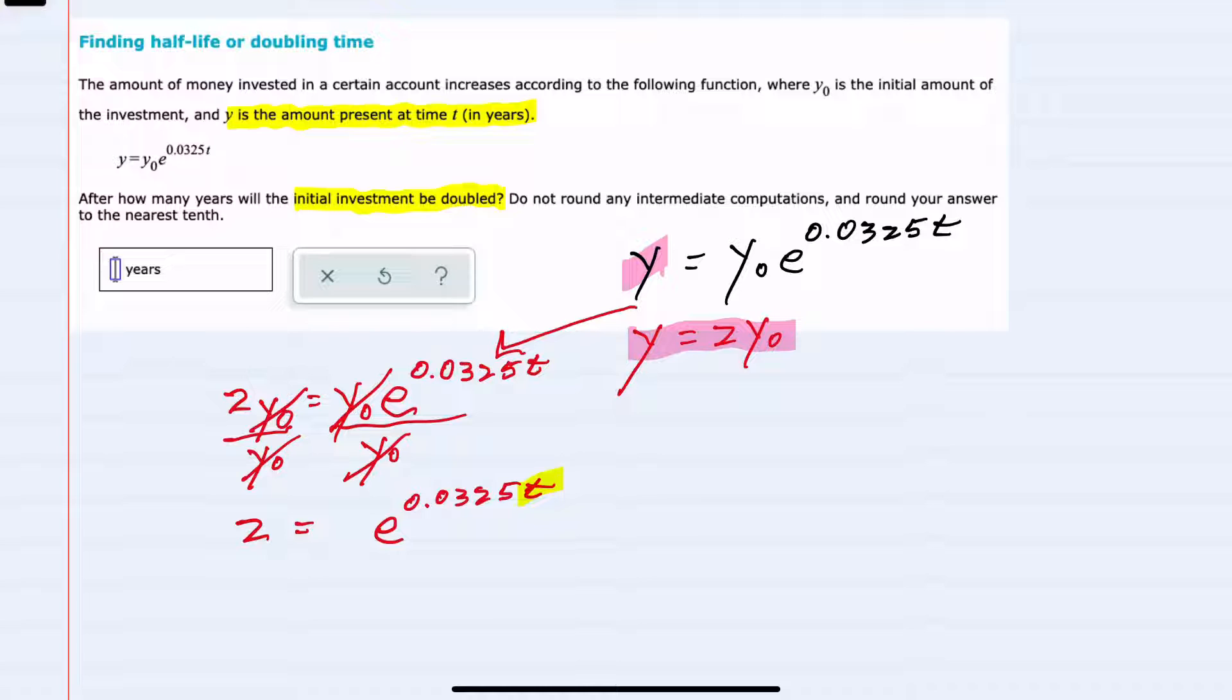To get t out of the exponent, we take the logarithm of both sides. Since our base is e, I can take the natural log of both sides. This allows us to bring that exponent down, and then we can solve for t by dividing both sides by the coefficient, 0.0325.